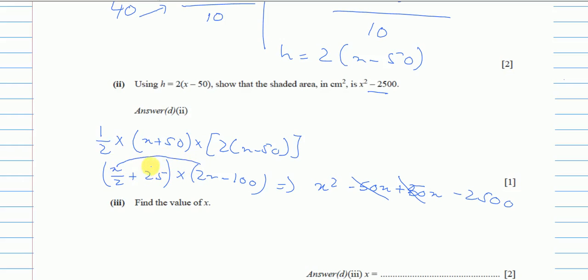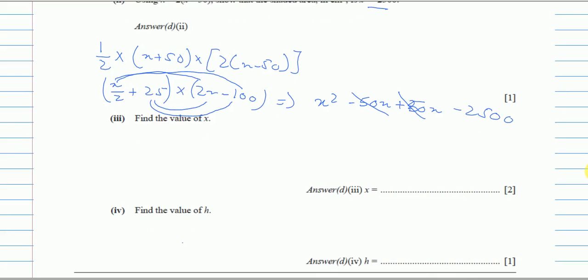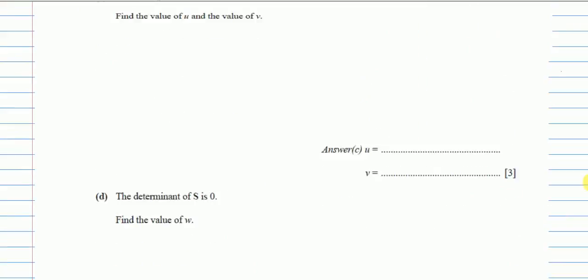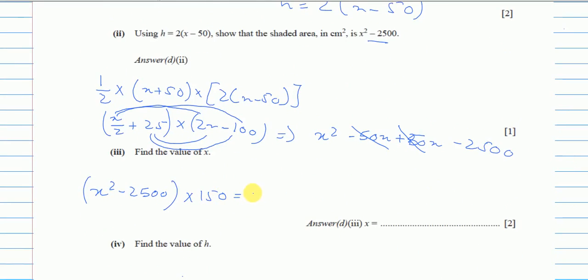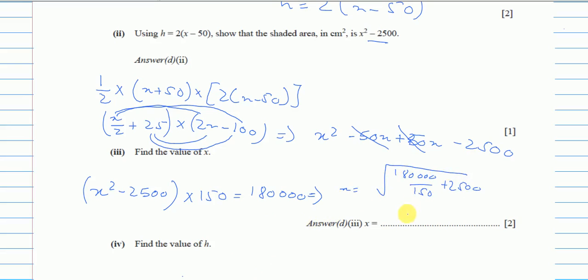Part D(iii): find the value of x. We know area × length = volume, so (x² − 2500) × 150 = 180,000. Dividing: x² − 2500 = 1200, so x² = 3700, giving x = √3700 ≈ 60.82. To three significant figures, x = 60.8 cm.